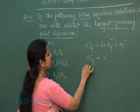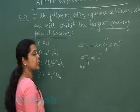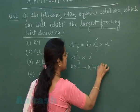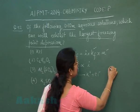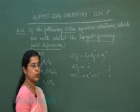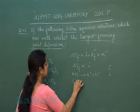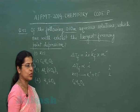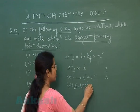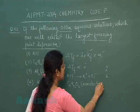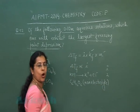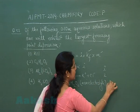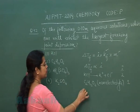The first option is KCl, a strong electrolyte that completely ionizes in aqueous medium, so the van't Hoff factor i equals 2. The second option is C₆H₁₂O₆, which may be glucose or fructose — it is a non-electrolyte that does not ionize or associate in aqueous medium, so its van't Hoff factor i is taken as 1.